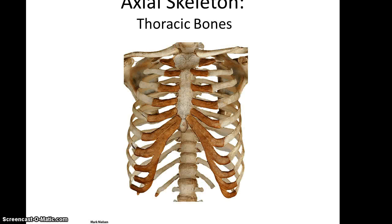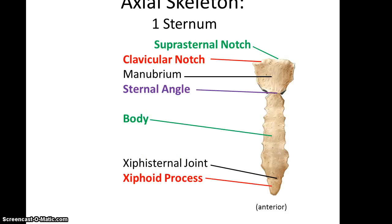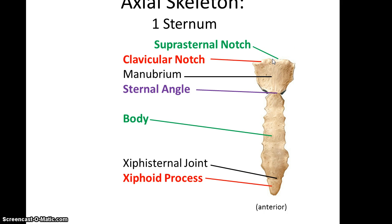The thoracic bones: the ribs and the sternum. The sternum is a flat bone with three main regions: the manubrium, the body, and the xiphoid process. The manubrium has the clavicular notch where the clavicles articulate, and the suprasternal notch above the sternum. The sternal angle is where the manubrium transitions into the body of the sternum, and then the xipho-sternal joint is where the body transitions to the xiphoid process.